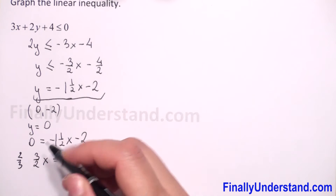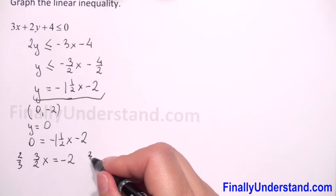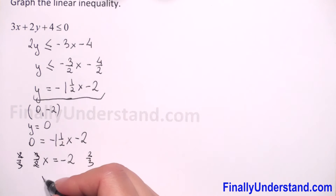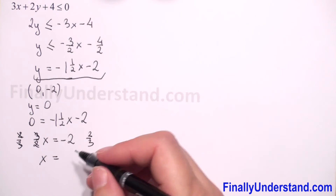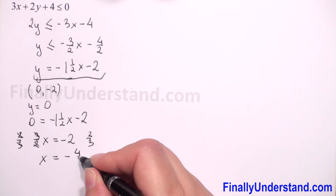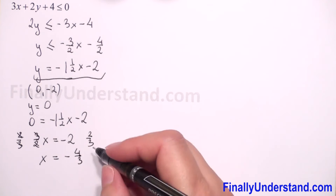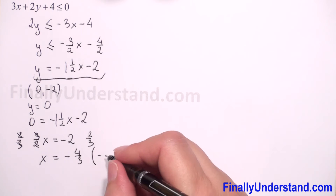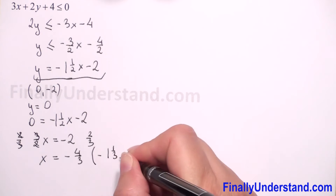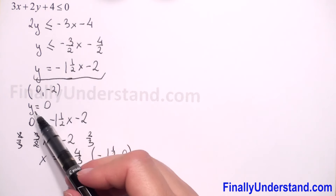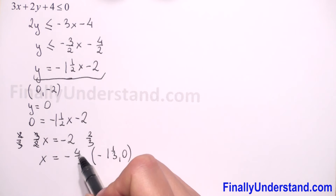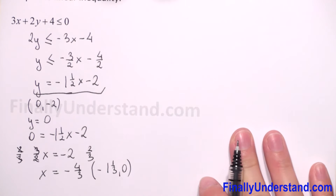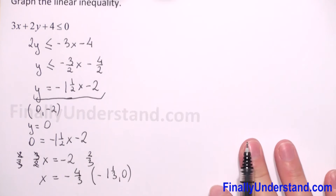Now I will multiply both sides by 2 over 3 to reduce the fraction. We can reduce, and we have x equals negative 4 over 3. So we have the x-intercept point: x is negative 4 over 3, which is negative 1 and one third, and y was 0. So the x-intercept point is (-1⅓, 0).